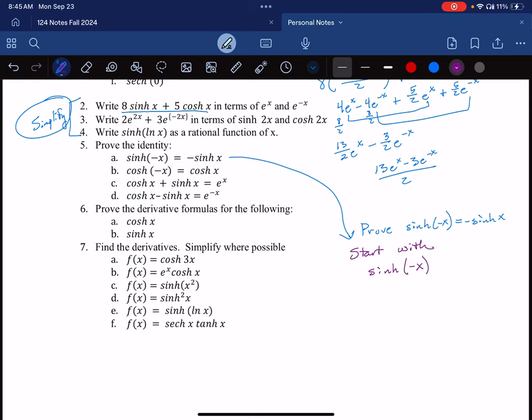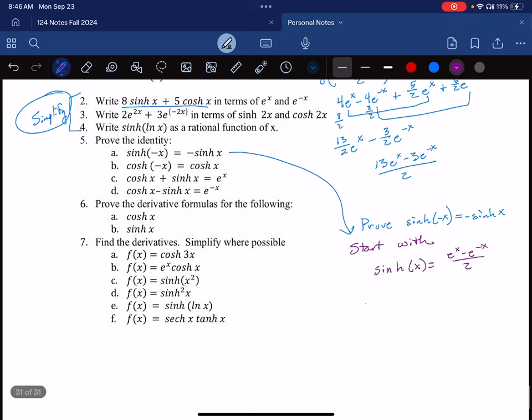And I'm going to go back to the fundamental definition. And I'm going to write this in a couple ways. So I'm going to start with that I know sinh of x is e to the x minus e to the minus x over two. So now that means that when I plug in negative x, and this is where I'm going to start the proof. So this is what I know.